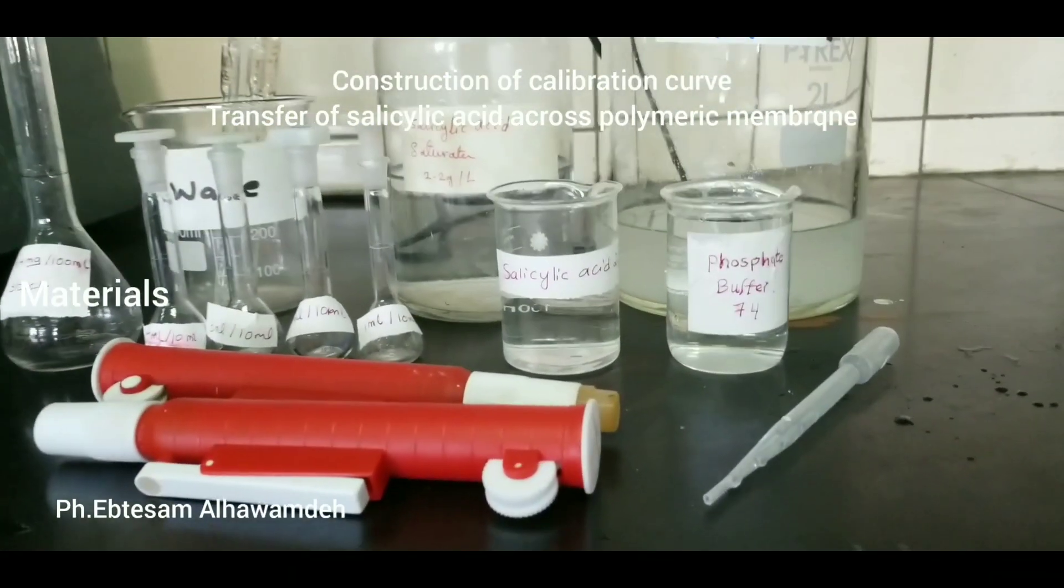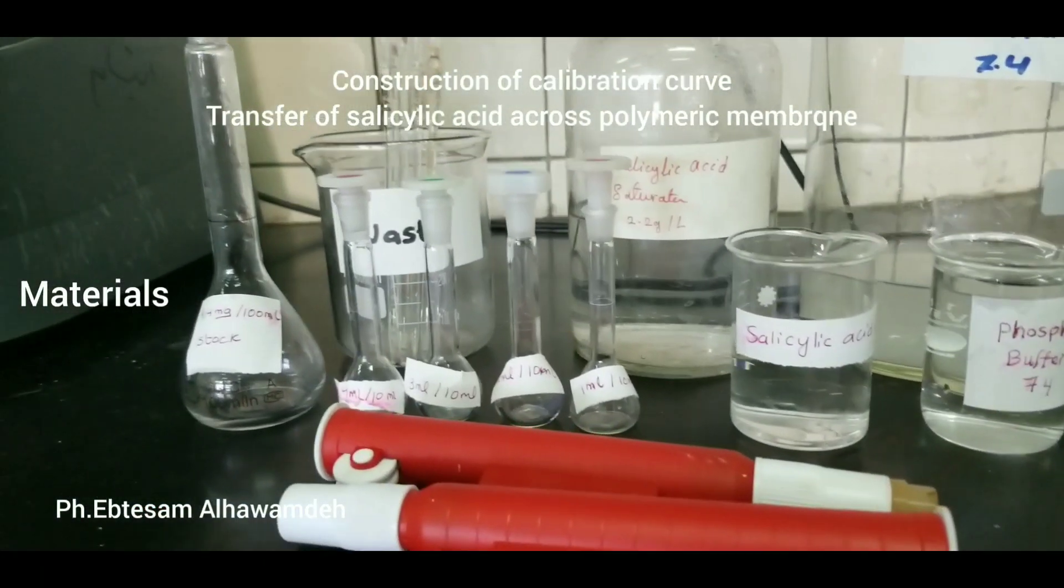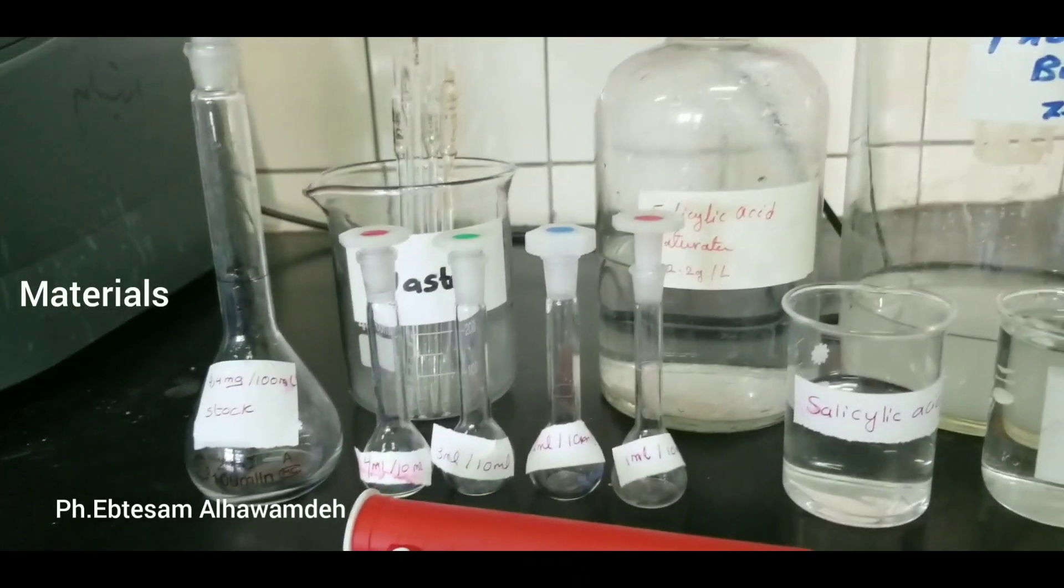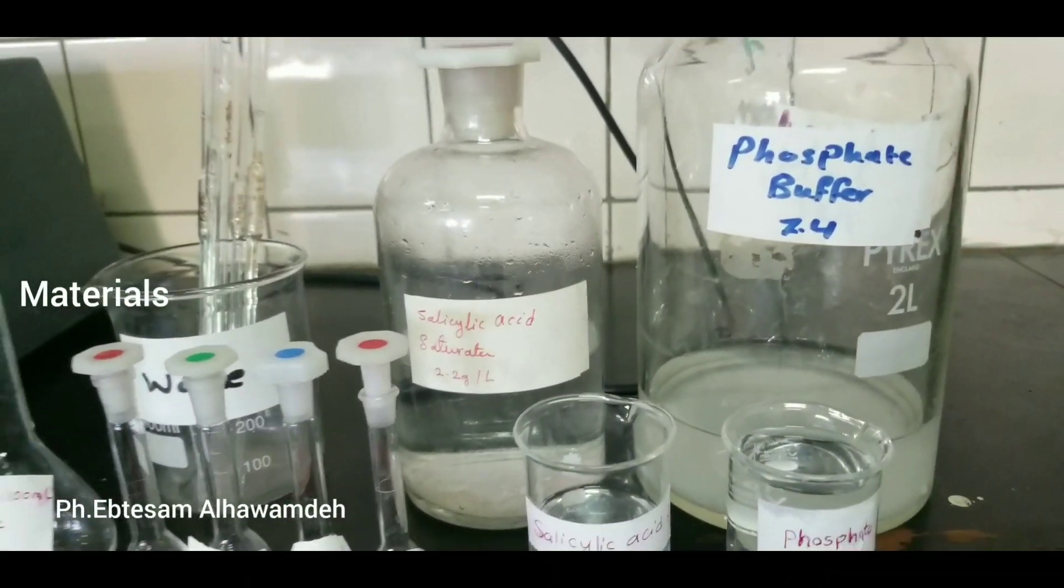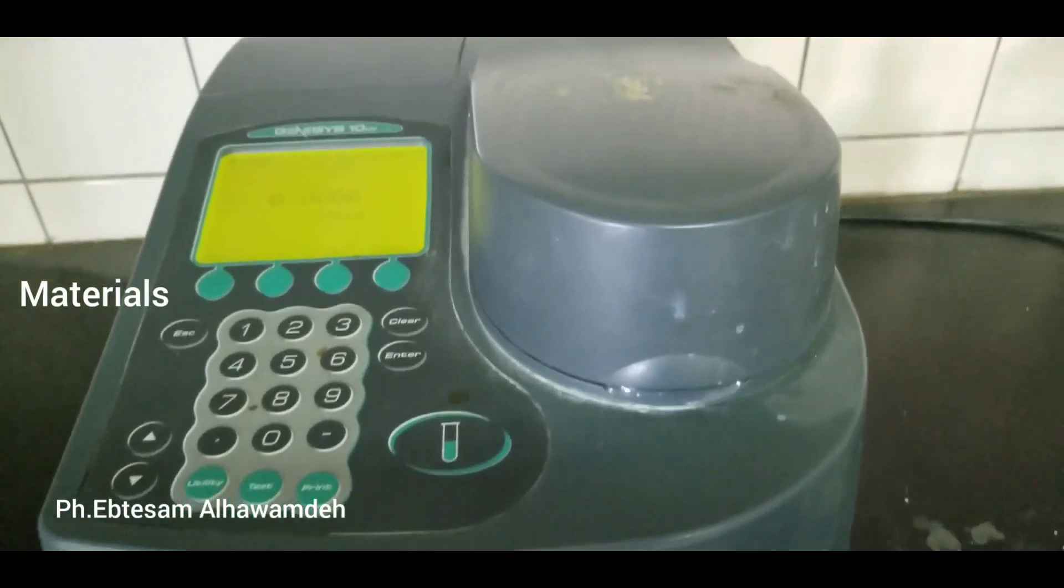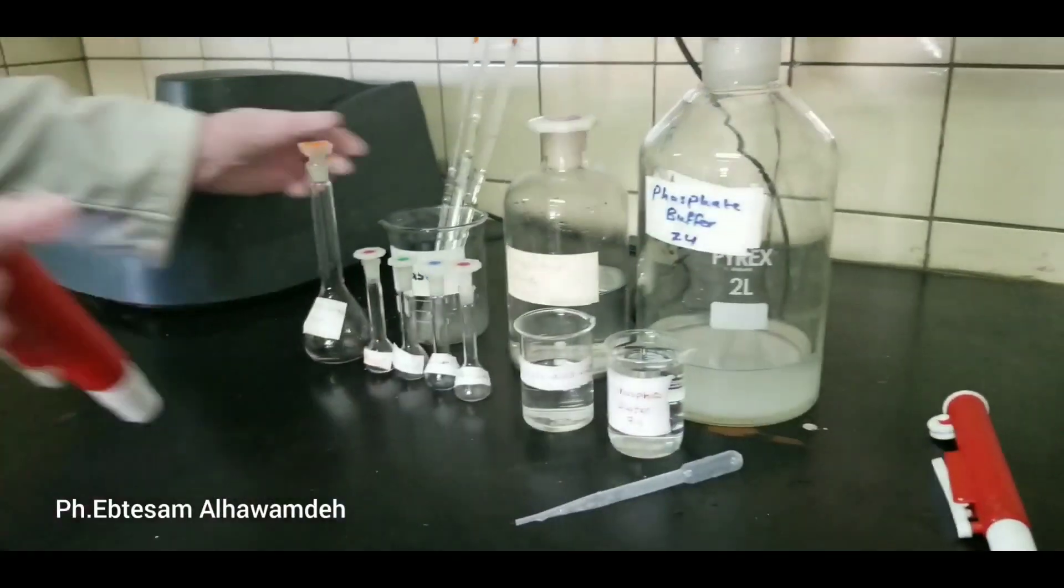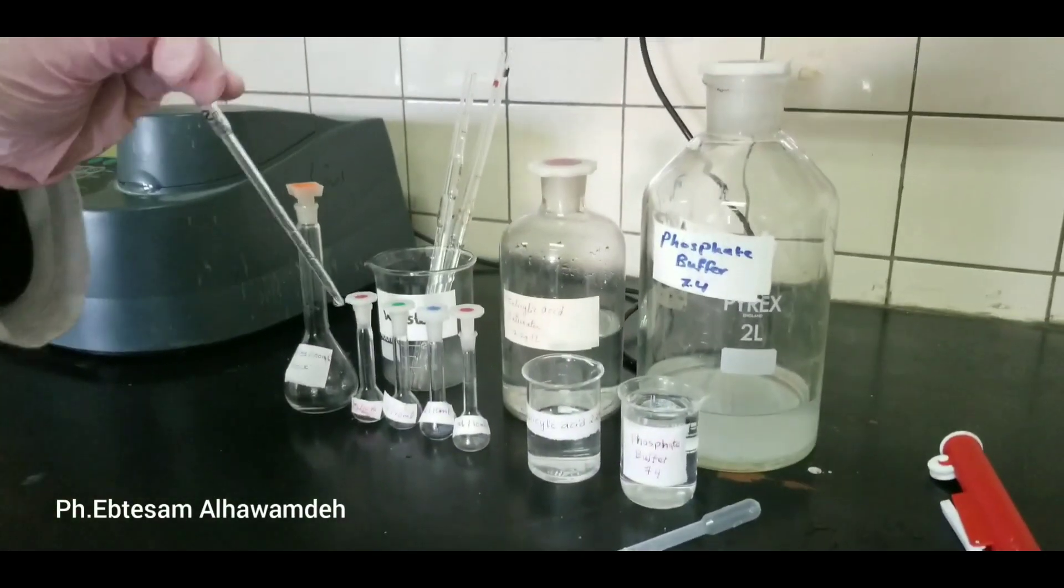Construction of calibration curve, transfer of salicylic acid across polymeric membrane. Materials: Phosphate buffer, salicylic acid, volumetric flask 10 ml and 100 ml.